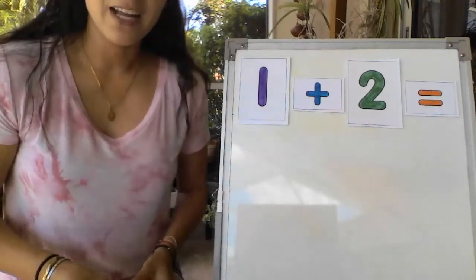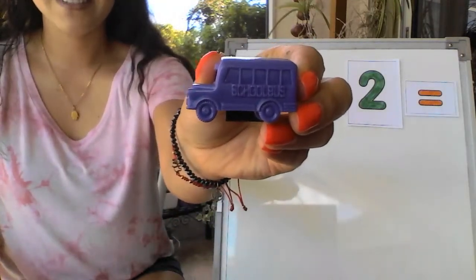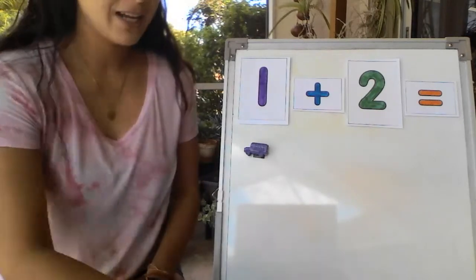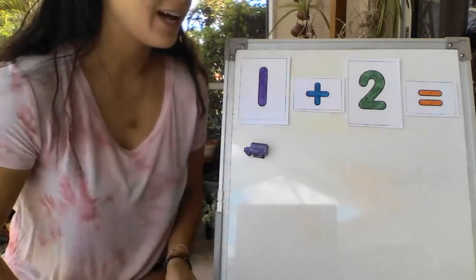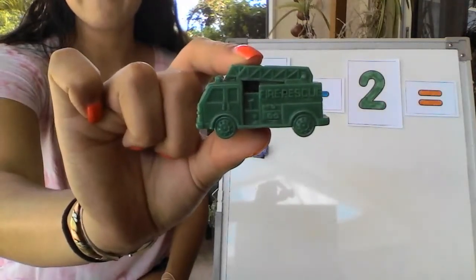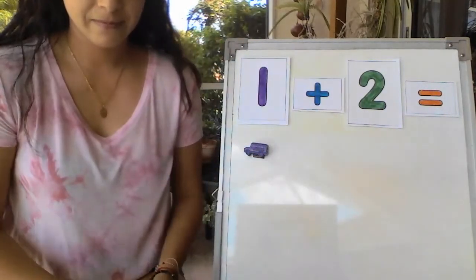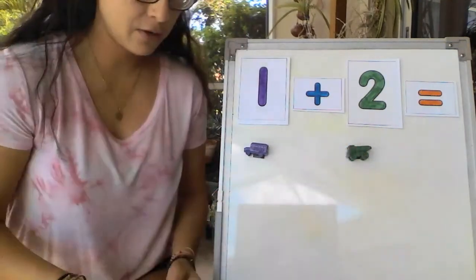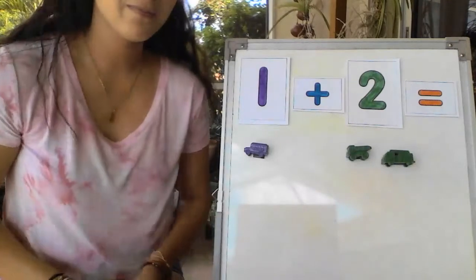So for 1 I have a school bus. 1. For 2 I have these vehicles. A fire truck and a dump truck. So I'm going to put those underneath number 2.